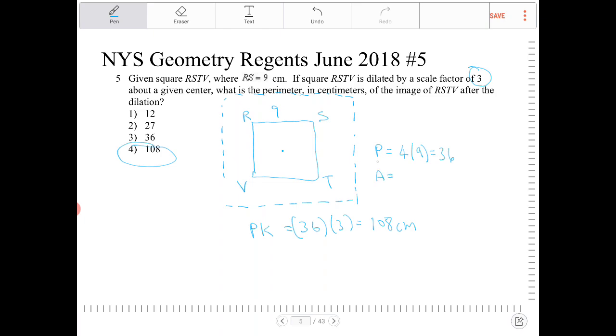The area of the original here is 9 times 9, and that's 81. The area of the image, even though this question is not asking for it, we're not going to be multiplying by k, but we're going to be multiplying by k squared.